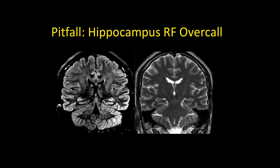A key pitfall: on FLAIR, you might notice the left hippocampus appears brighter than the right and suspect mesial temporal sclerosis. But if you step back and see that the entire temporal lobe and cerebellum on that side are brighter than the contralateral side, this is actually an artifact from RF inhomogeneity at 3 Tesla. If the entire lower left side of the brain is brighter, that's likely an RF overhaul artifact. Confirm by checking T2 — there should be no signal abnormality or architectural distortion in the left hippocampus.